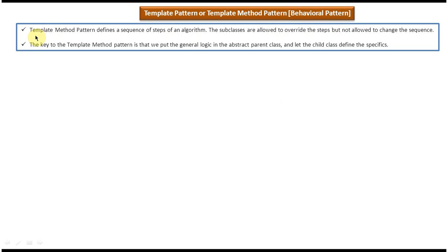This is the first explanation. Template method pattern defines a sequence of steps of an algorithm. The subclasses allow to override the steps but not allow to change the sequence.